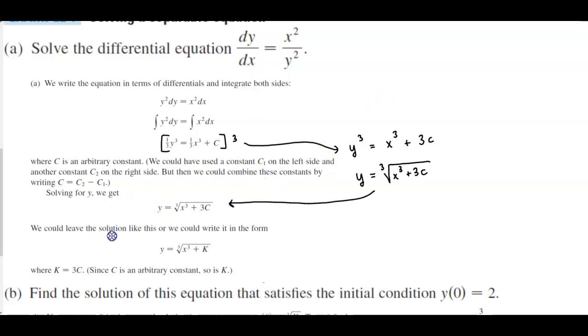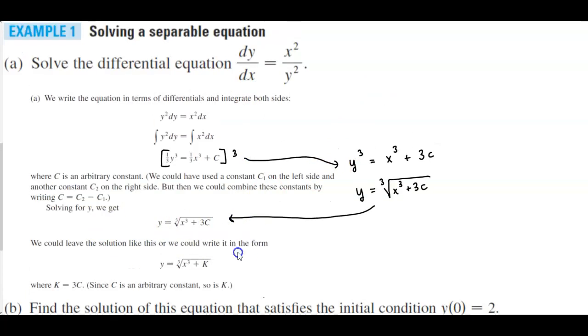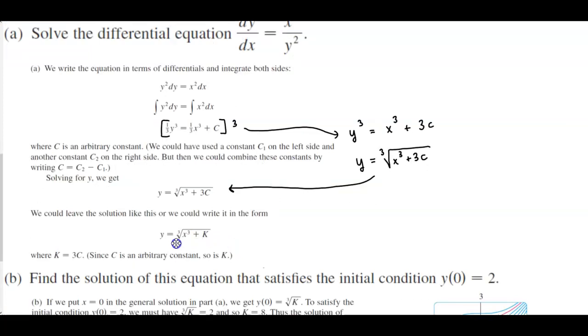We could leave the solution like this, or we can write it in the form y equals the cube root of x cubed plus k, where k is a constant equal to 3c. Since c is an arbitrary constant, so would be k.